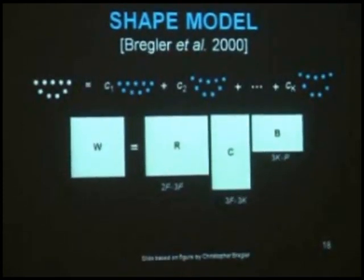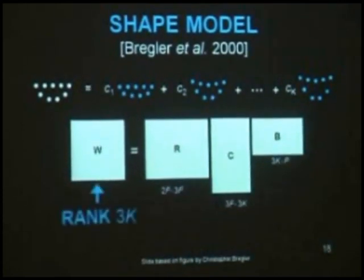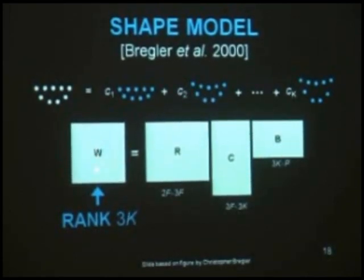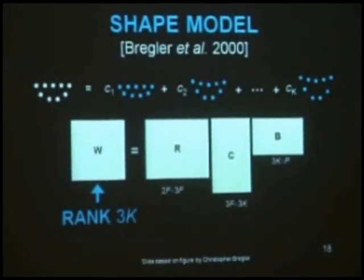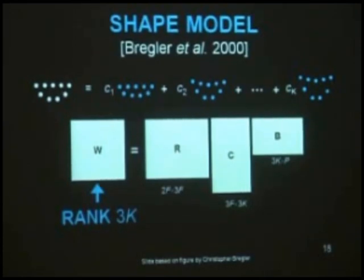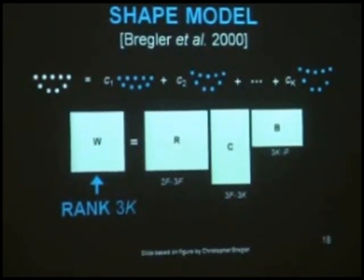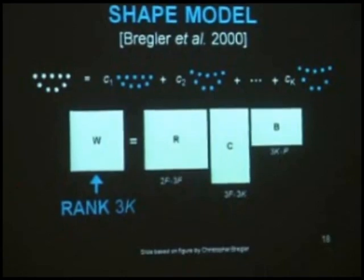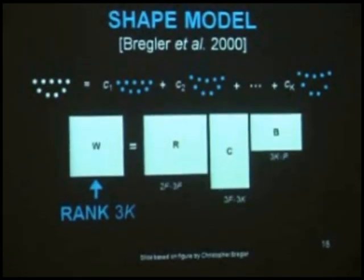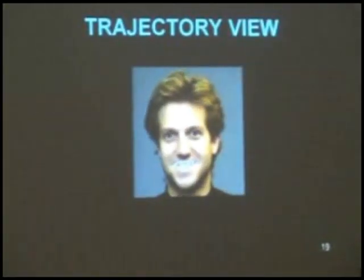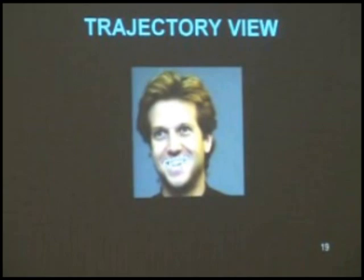They were able to come up with a similar rank restriction, except the rank of this matrix is not 3 as in the rigid case — it's actually 3K, if the restrictive assumption of having K bases is correct. And they were able to exploit it in a somewhat similar way.